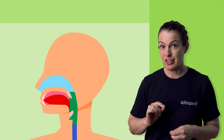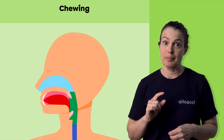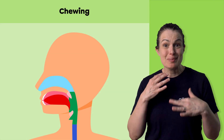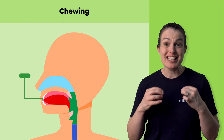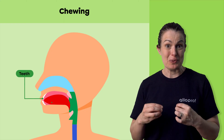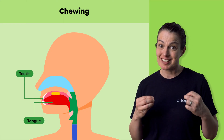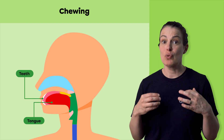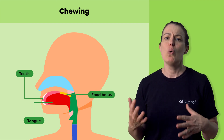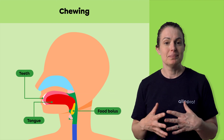The first mechanical digestion process that food undergoes is chewing. This is a movement of the jaws that allows the teeth to grind the food. The movement of the tongue mixes the crushed food with saliva to form a mass called the food bolus, or the alimentary bolus.